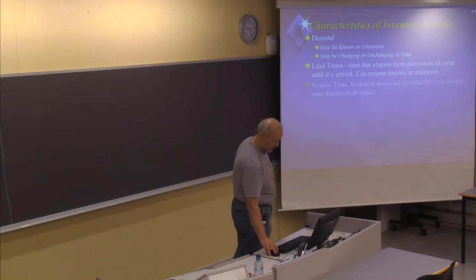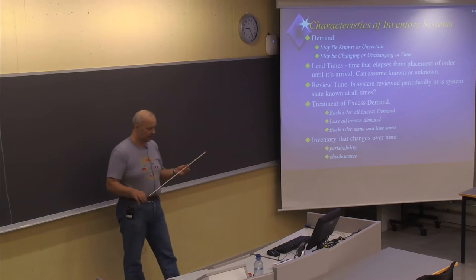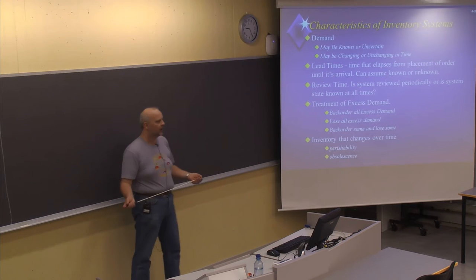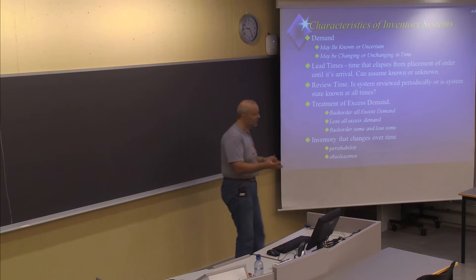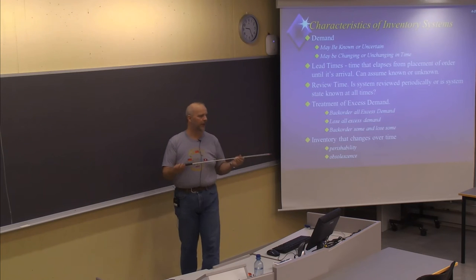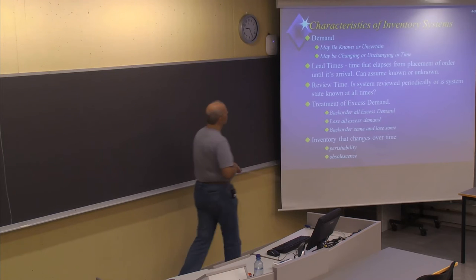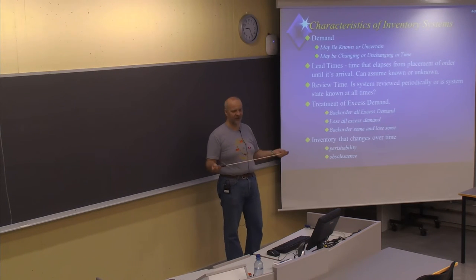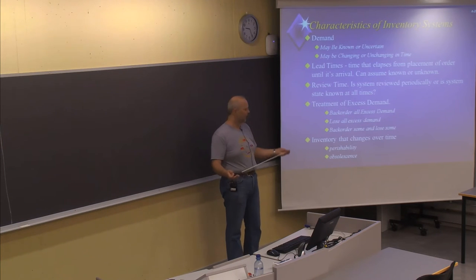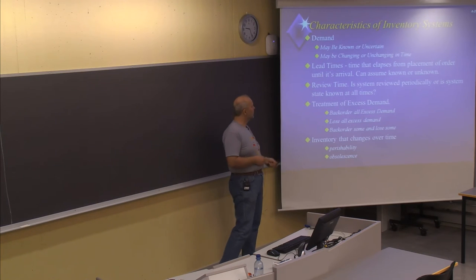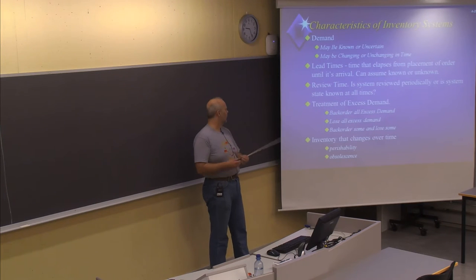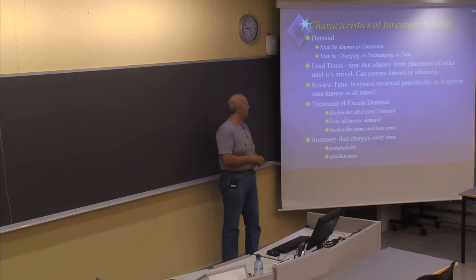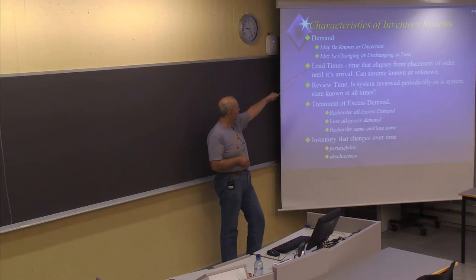We can also talk about the characteristics of inventory systems — characteristics for different types of markets or different products. Characteristics might relate to demand: it could be known or uncertain. Do you know the demand rate? Is it a fixed rate or is it uncertain? If it is uncertain, you should try to get some knowledge of it — to have an expected demand, to know the standard deviation in different periods — to have an idea about what the demand will be, even if you don't know the exact amount. Demand may also be changing or unchanging in time; in the forecasting part of this course we talked about trends and seasons, which are typical characteristics of demand.